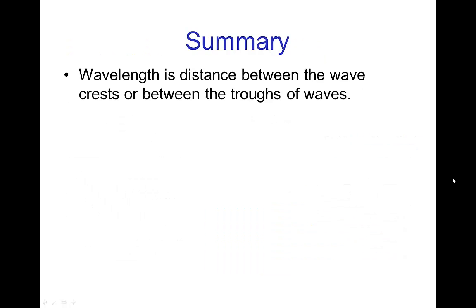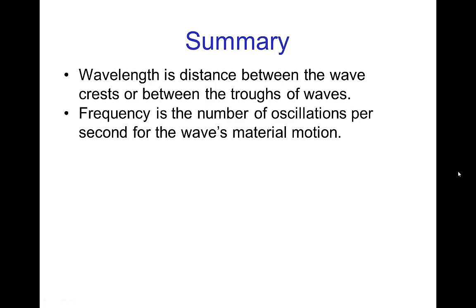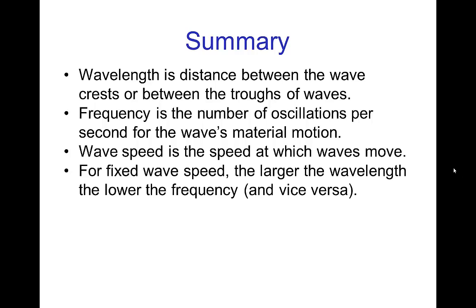So, in summary, wavelength is the distance between the wave crests or between troughs of waves. Frequency is the number of oscillations per second for a wave's material motion. The wave speed is the speed at which waves move, and as we saw these are all interconnected. So, when we have a fixed wave speed, the larger the wavelength, the lower the frequency.